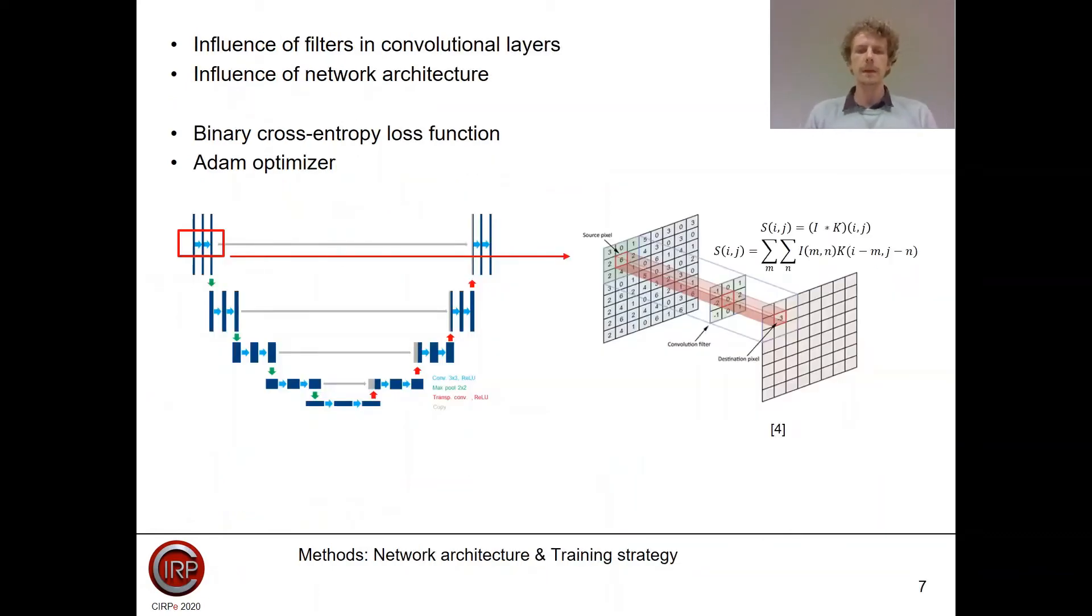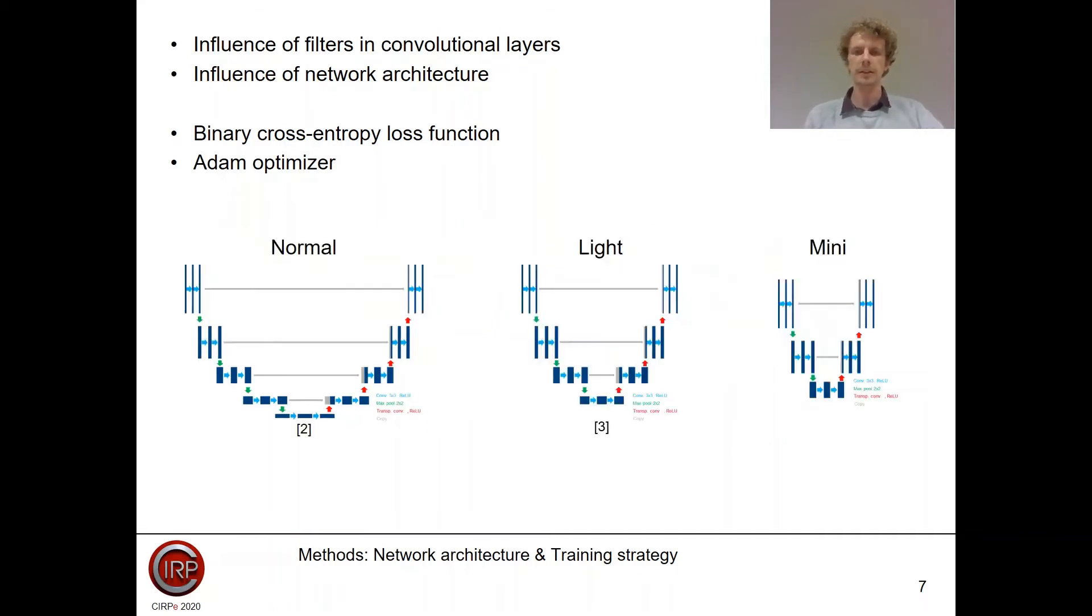The network that we used is a UNET architecture. Before training the network on all the different scans, we first investigated if we could optimize the network architecture by changing some parameters like changing the number of filters inside the convolutional layers or by changing the depth of the network. We combined those two parameters and then had nine different configurations that we trained on two different scans. All the networks are trained with the binary cross-entropy loss function and an Adam optimizer.